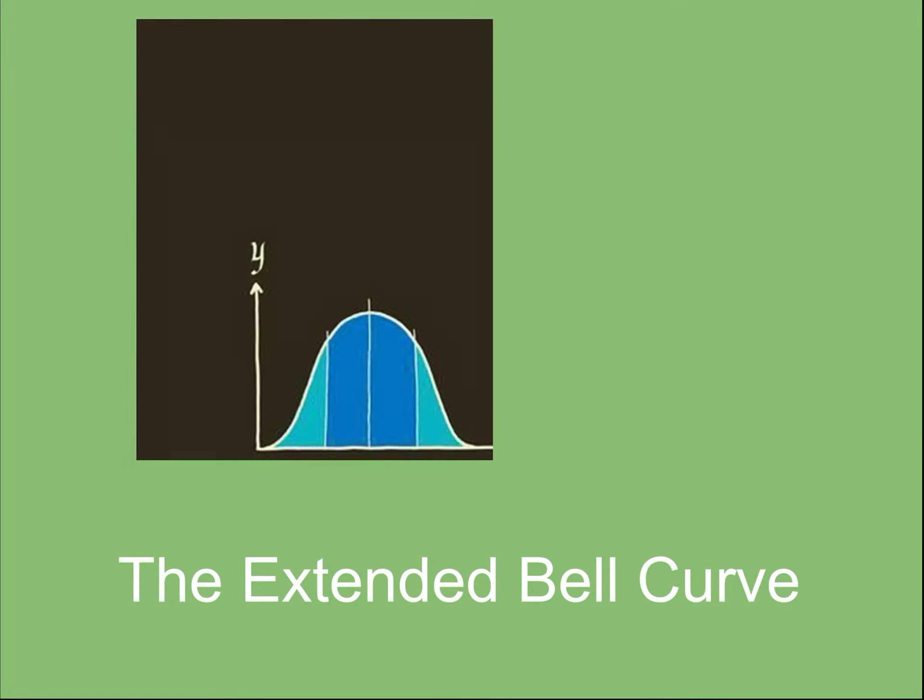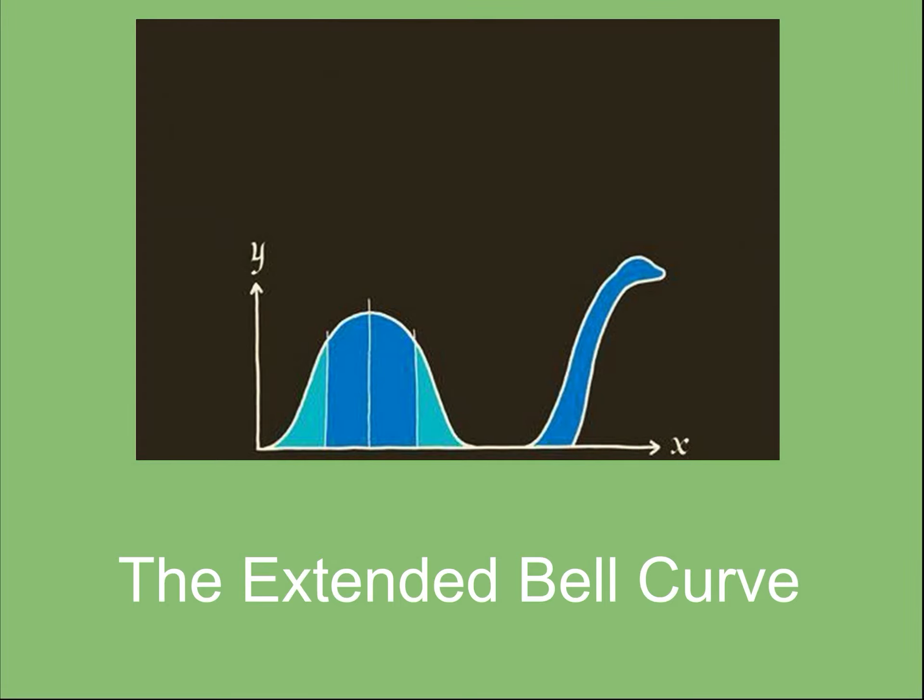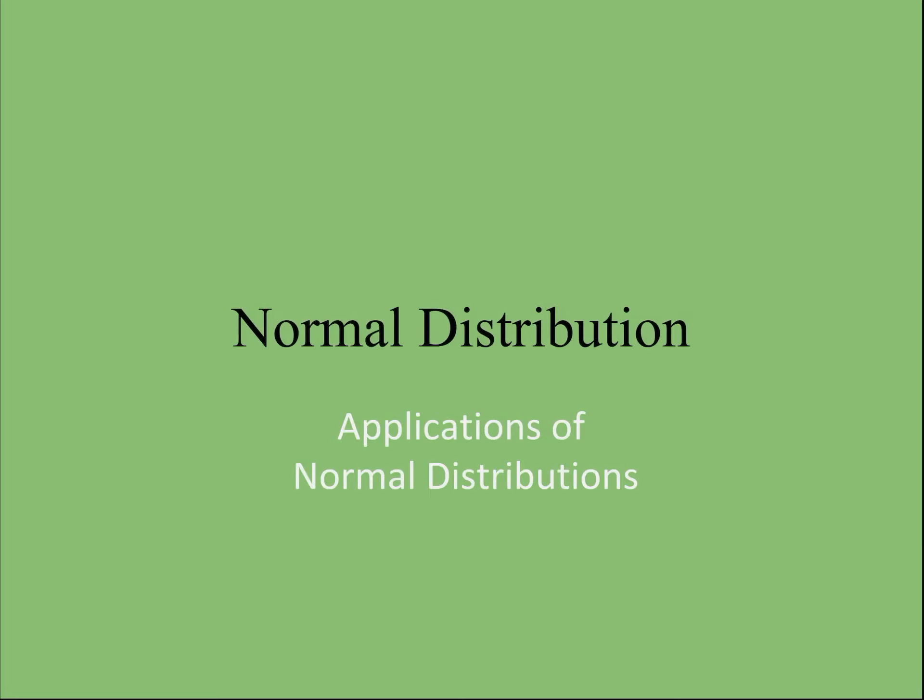In this section, we're going to take what we learned in the last section about the bell curve and z-scores and probabilities under our normal distribution. We're going to extend it. We're going to find examples where our mean is something other than 0 and our standard deviation is something other than 1. So instead of having standard normal distributions, in this section we're going to look at just normal distributions.